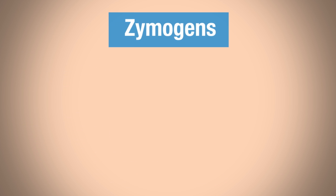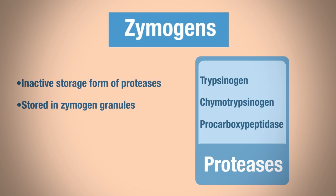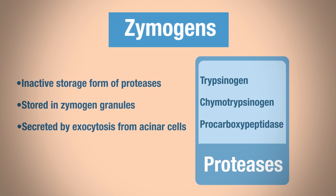Zymogens are inactive storage forms of proteases. These include trypsinogen, chymotrypsinogen, and procarboxypeptidase. These proteases are stored in zymogen granules — secretory cells that contain these inactive enzymes. They are secreted via exocytosis from the acinar cells of the pancreas and released into the duct, then activated by proteolytic activation, which we'll discuss later.